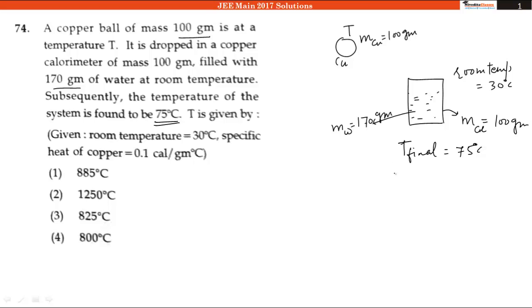We have to calculate the temperature T. Actually in this question, this ball is dropped in the container, in the calorimeter. The energy conservation says m·s·ΔT for the copper ball will be equal to m·s·ΔT of the calorimeter plus m·s·ΔT of the water.